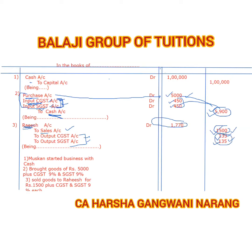So why is the output GST a liability? When we sold the goods, the GST we collected is a liability because we collected the GST from the customer, but it ultimately goes to the government. So Muskan is liable to pay 135 plus 135 = 270 rupees to the government. This collection is therefore a liability.